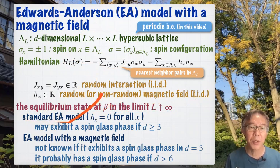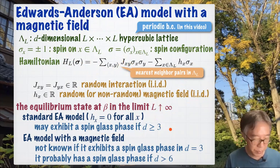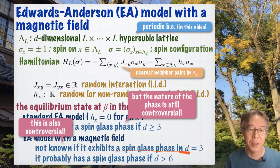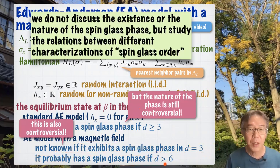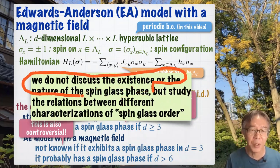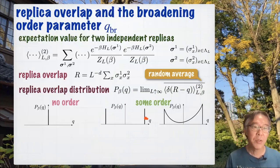In the standard Edwards-Anderson model without a magnetic field, people believe the model exhibits a spin glass phase at sufficiently low temperature, but mathematically there is no proof. The nature of this spin glass phase is still very controversial. With a magnetic field, it is even controversial whether there is a phase transition in three dimensions. In this work, we do not discuss the existence or nature of the spin glass phase; we study only the relations between different characterizations of spin glass order.